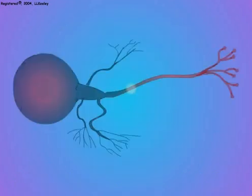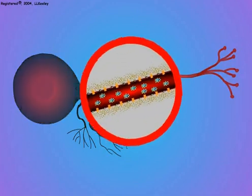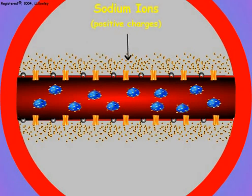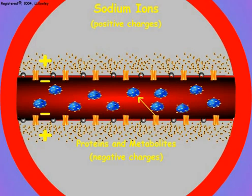Here is a neuron. This section from an axon membrane shows the organization of the membrane and the molecules that affect sodium permeability. Cell membranes are naturally impermeable to sodium. Because positively charged sodium ions cannot enter the cell, the outside of the cell is positive compared to the inside, which contains many negatively charged molecules such as proteins and metabolic products.